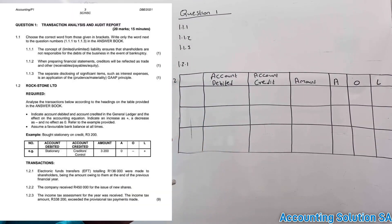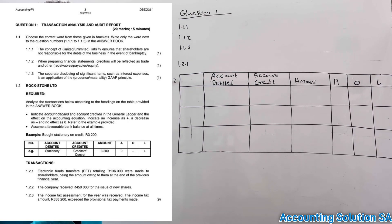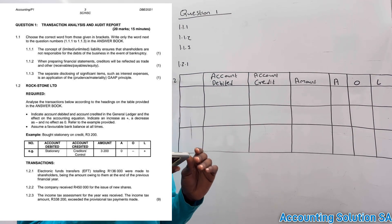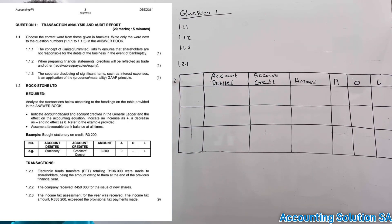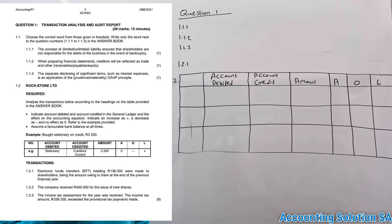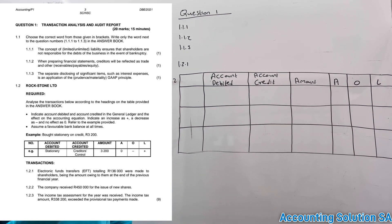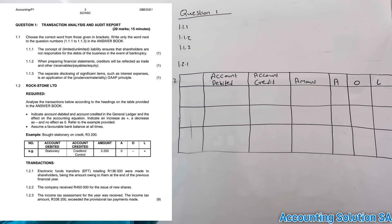Before we go to our accounting equation, we have some basic questions related to the audit report as well as the company. We need to choose the correct words from those in brackets and write only the words next to the question number. Question 1.1.1: the concept of limited or unlimited — those are the options — liability ensures that the shareholders are not responsible for the debt of the business in the event of bankruptcy.